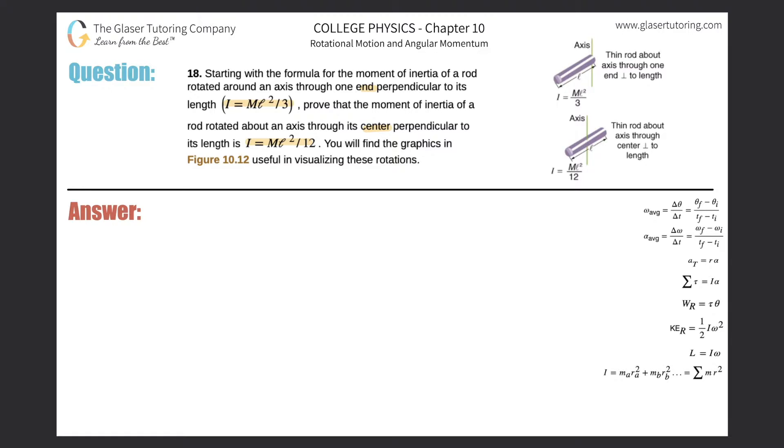All right, so we need something called the parallel axis theorem in order to figure this out. So I'm going to write it down. The parallel axis theorem says that the moment of inertia for the new system will be equal to the moment of inertia for the system rotated about the center of mass plus the mass of the whole system multiplied by the displacement of the axis squared.